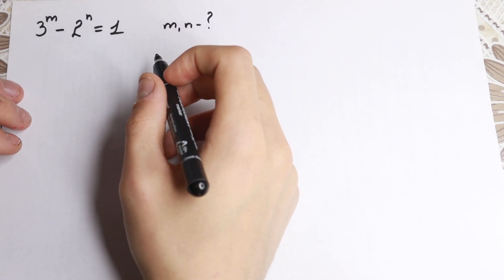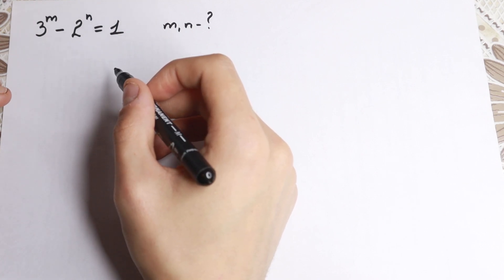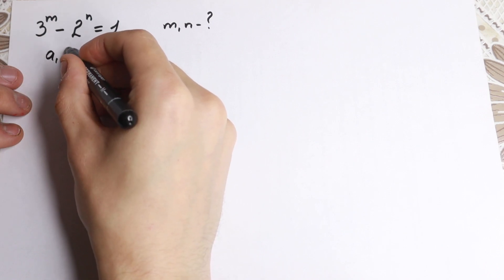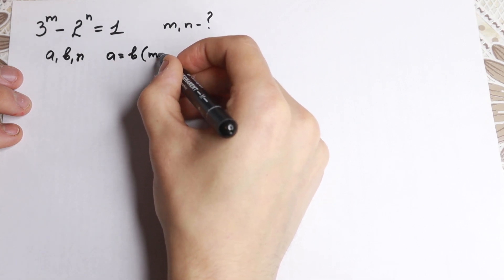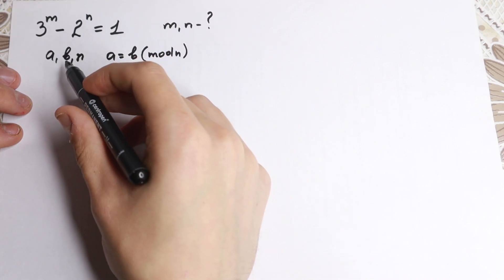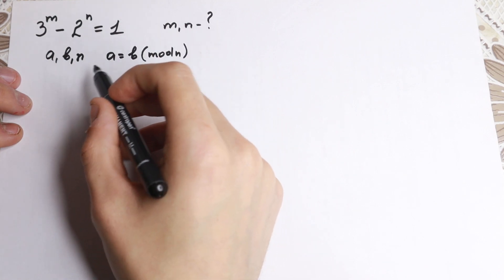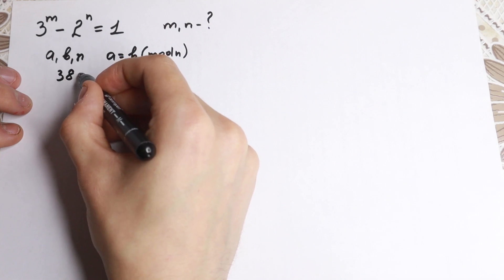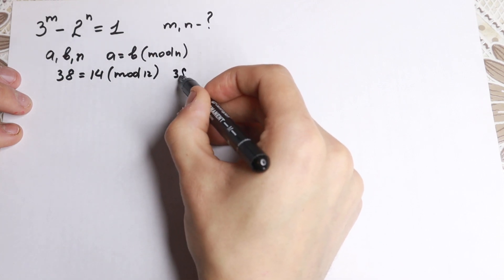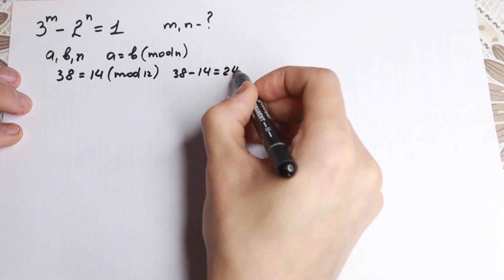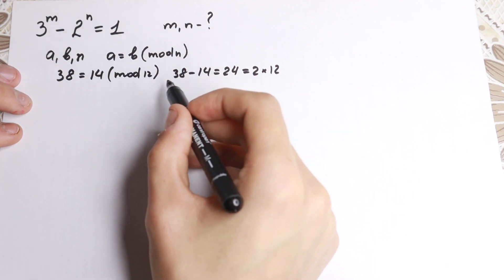First of all we need to know a definition about modular arithmetic. Modular arithmetic means recycling of integers when they reach a fixed value. For example, if we have integers a, b and n, we can write it as a equal to b mod n, and we read it as a is congruent to b mod n. So if a minus b is a multiple — for example, 38 equal to 14 modulo 12 because 38 minus 14 equals 24, and 24 can be written as 2 times 12. We need these notes in our case.